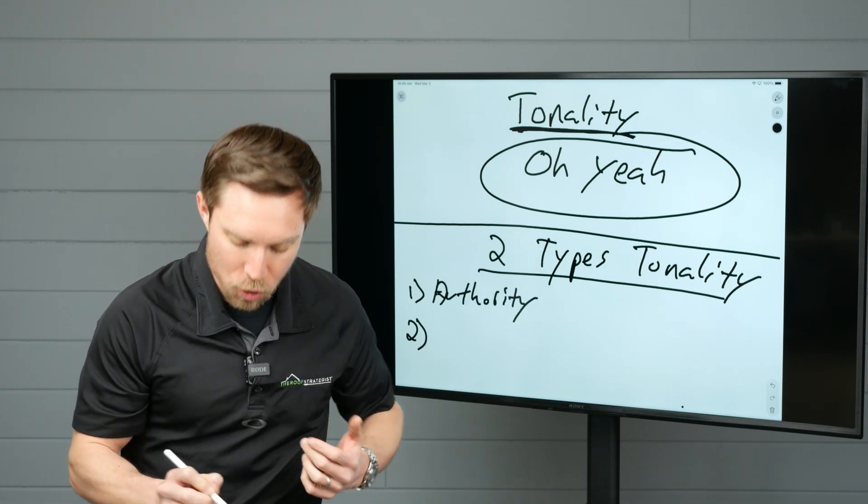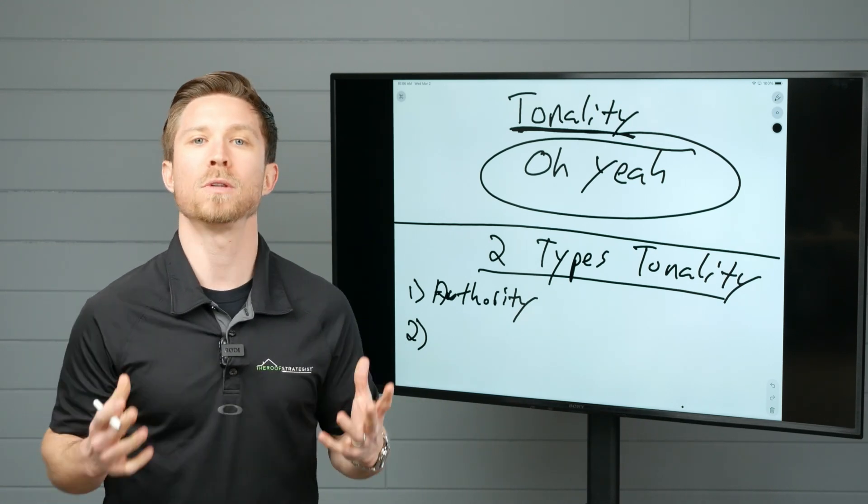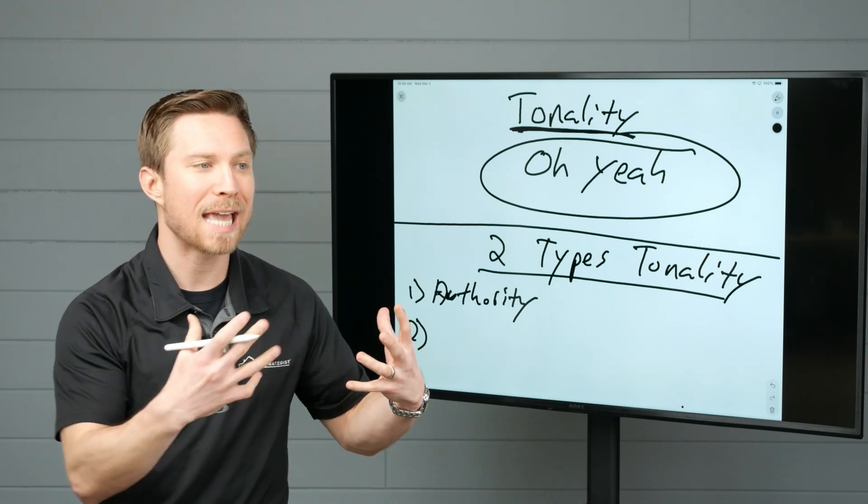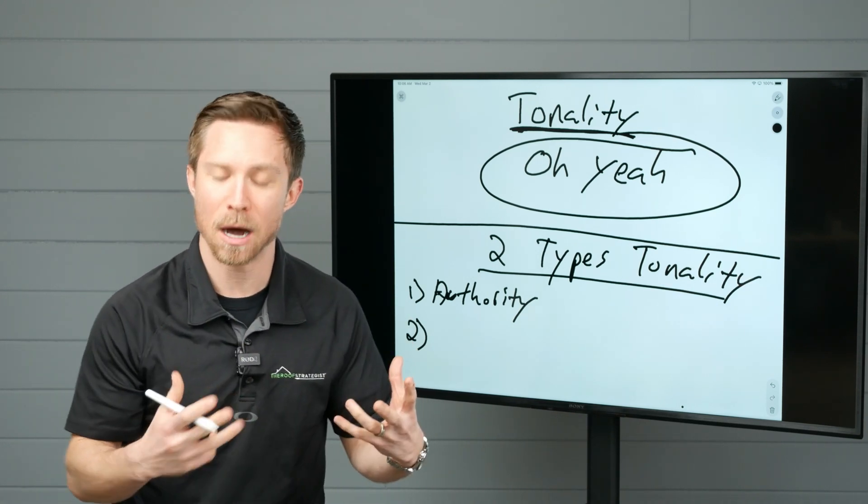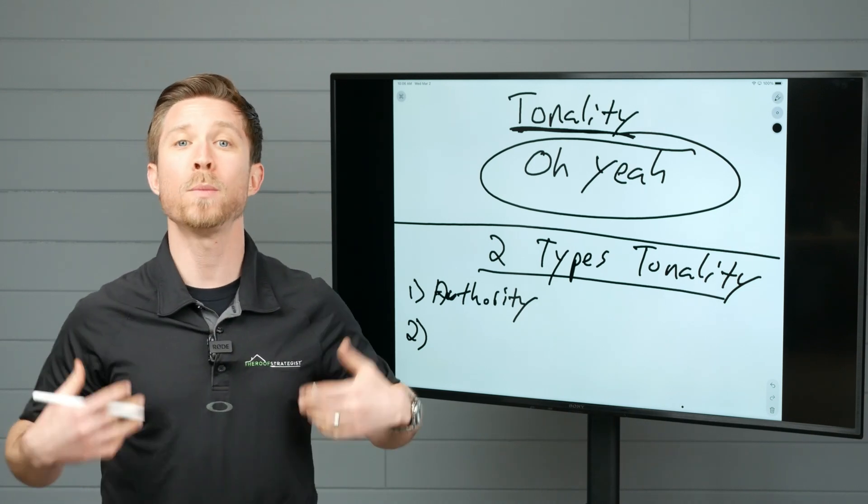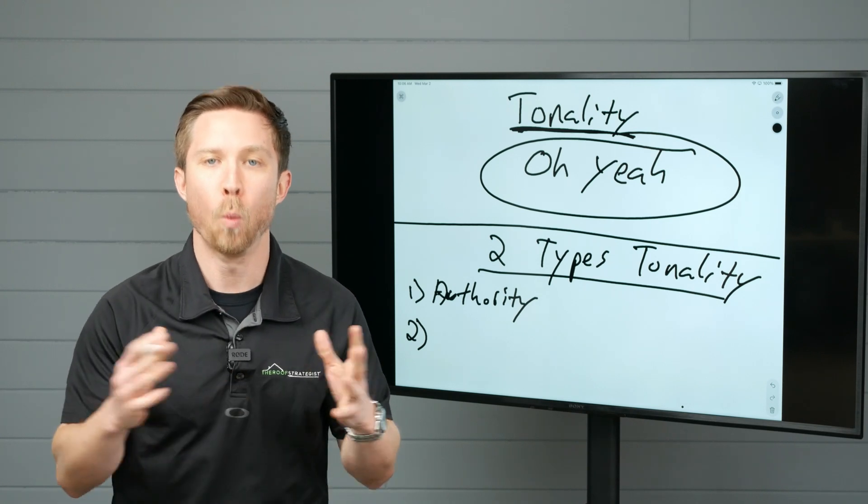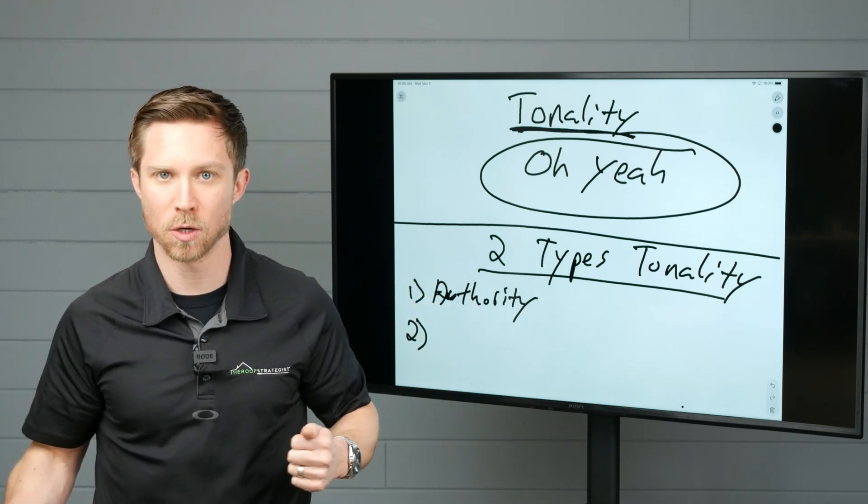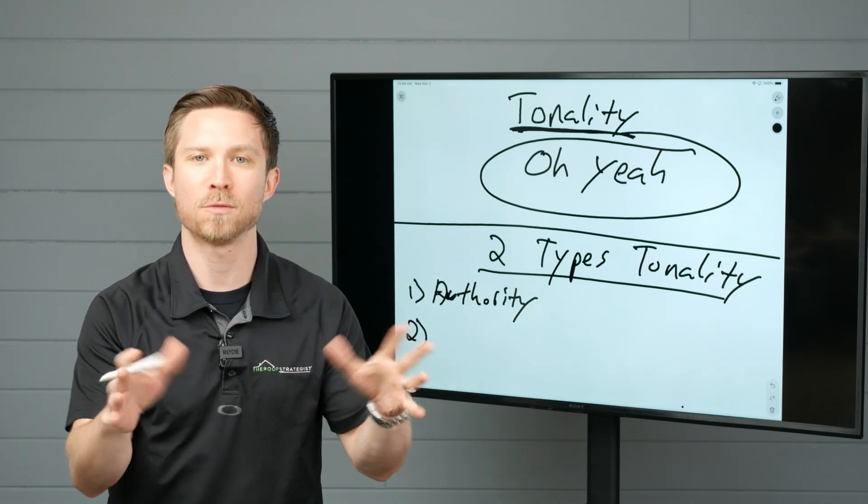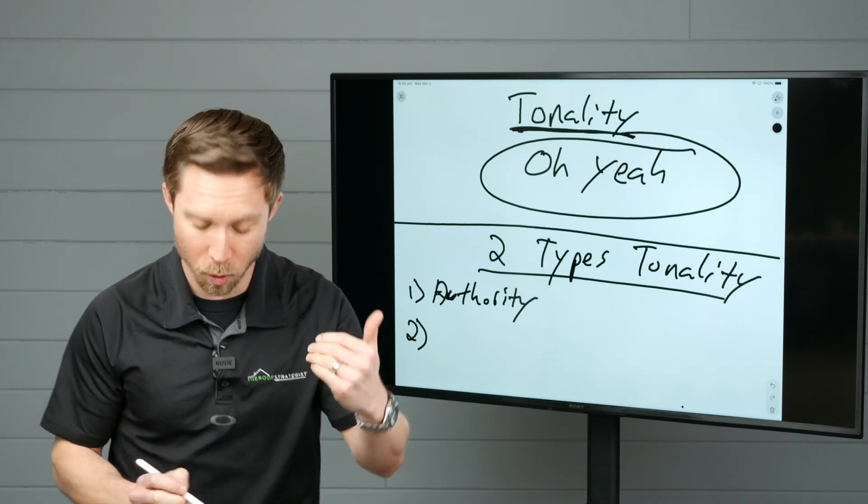Authority is someone who knows what they are talking about. They are an expert in their field. When you listen to someone who's communicating something they're passionate about or excited about, they use authority. It is directive. It is a place of power. When we communicate with homeowners, it's not a question. Mr. Homeowner, I want to explain how this process works for you. Mr. Homeowner, I understand you're getting three estimates. Let me explain why that might not be working in your favor. This is authority.